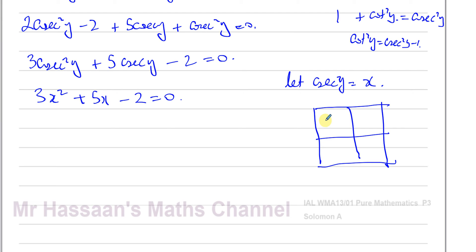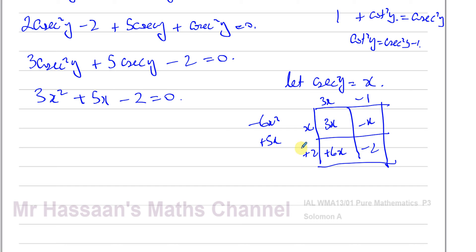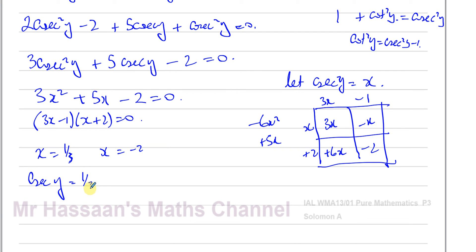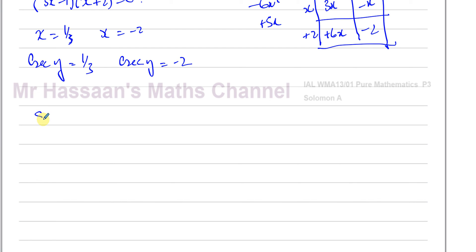Factorizing 3x² + 5x − 2: the product is −6 and the sum is +5, so we split as +6x and −x. This gives (3x − 1)(x + 2) = 0, so x = 1/3 and x = −2. Therefore cosec y = 1/3, giving sin y = 3 (no solution, since sine cannot exceed 1), and cosec y = −2, giving sin y = −1/2, which does have a solution.